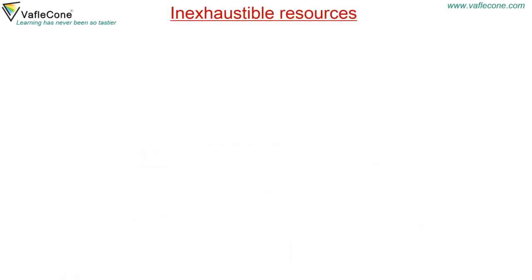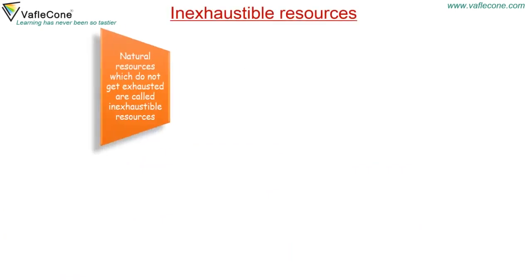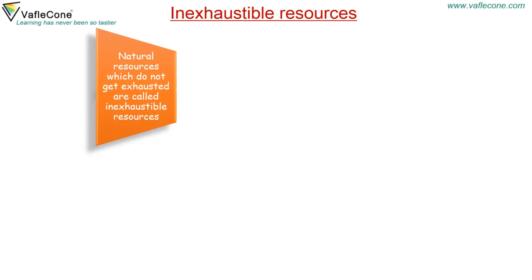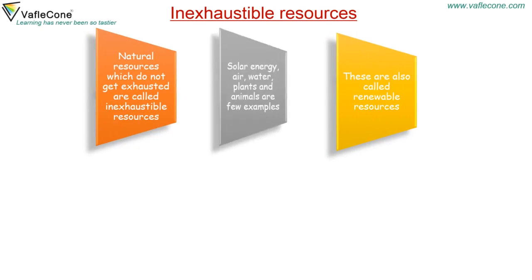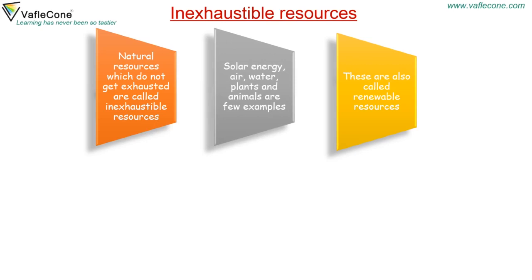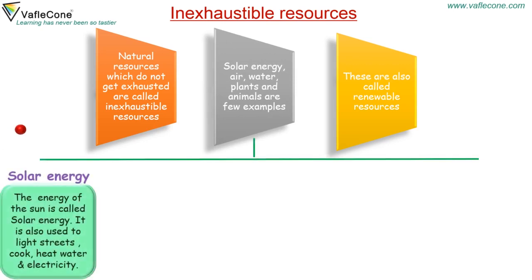Inexhaustible resources: Natural resources which do not get exhausted are called inexhaustible resources. These are also called renewable sources. For example, solar energy, air, water, plants and animals. The energy of the sun is called solar energy. It is used to light streets, cook, heat water and generate electricity.